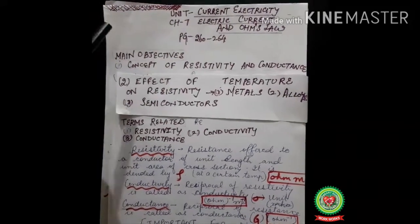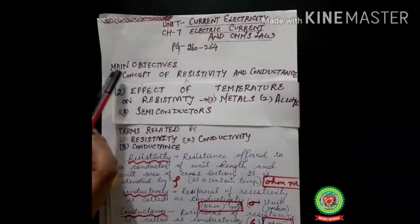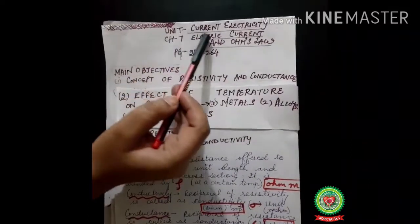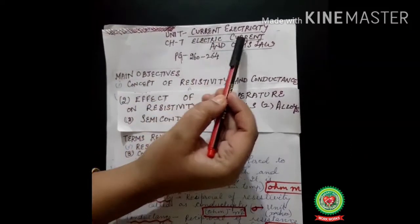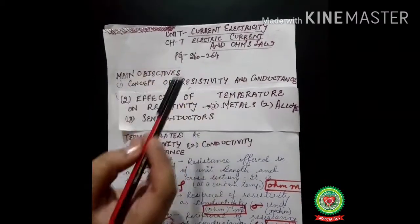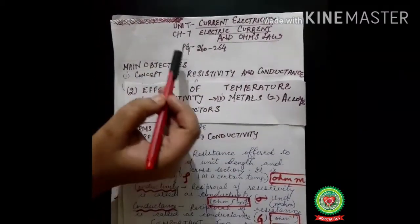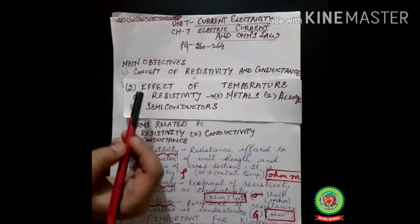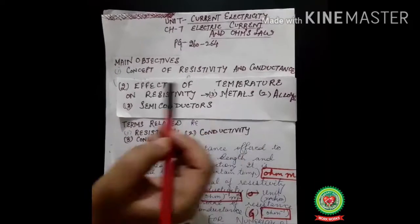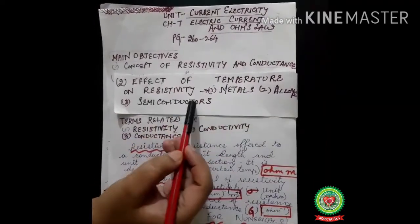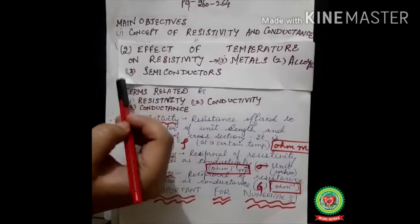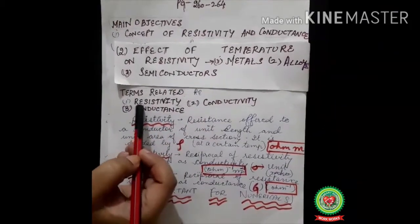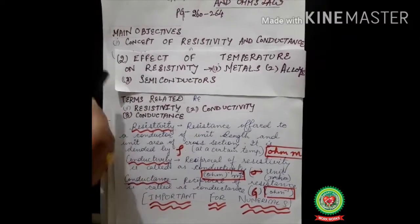Hello students, today we shall be starting with the main topics: concept of resistivity and conductance, unit current electricity. The chapter is Electric Current and Ohm's Law, page number 260 to 264. The main objectives of these topics will be resistivity, conductivity, effect of temperature on resistivity for metals, alloys, and semiconductors. The related terms will be resistivity, conductivity, and conductance.